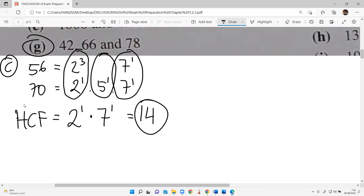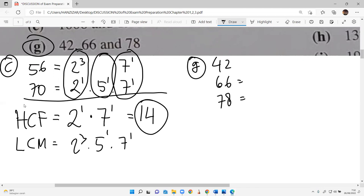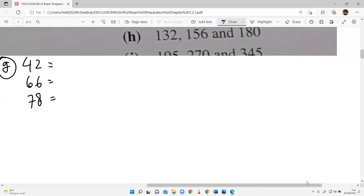But if you are asked to find the LCM, you already have the factorization. 2 power 3, take all, and high, all and high. 5 times 7. But that's not asked here. Part G, more challenging: 42, 66, and 78. The numbers are more, but the method is the same.